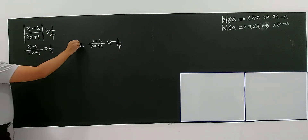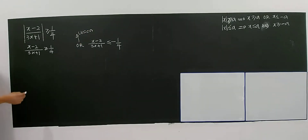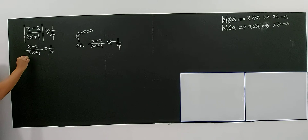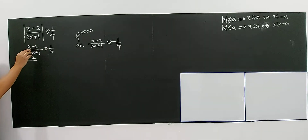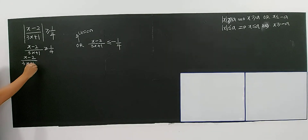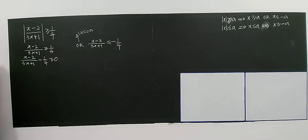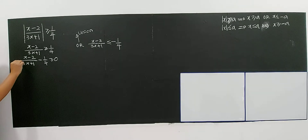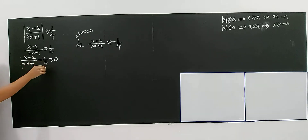This is a union. Now, solving rational inequality — first you have to make sure one side is zero. So bring the 1/4 over: (x minus 2)/(3x plus 1) minus 1/4 greater than or equal to 0. You need to multiply 4 for this fraction and multiply (3x plus 1) for the other fraction to equate the denominators.